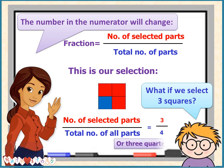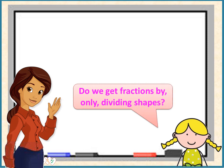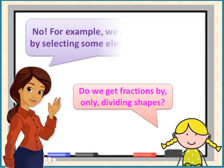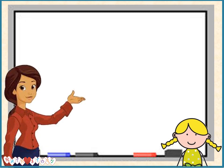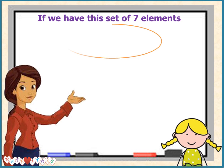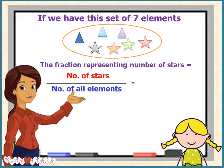Do we get fractions by only dividing shapes? No! For example, we can get fractions by selecting some elements from a set. If we have a set of seven elements, the fraction representing the number of stars equals the number of stars over the number of all elements, which equals four over seven.